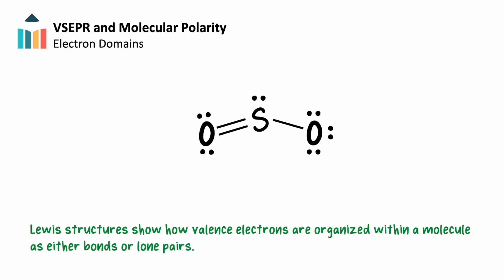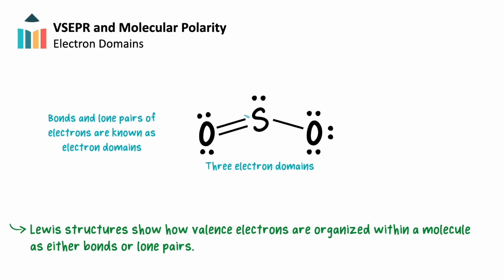Lewis structures show how valence electrons are organized around the atoms within a molecule. Around the central atom in a structure, we call the electrons that are grouped in bonds or lone pairs electron domains. For example, the central sulfur atom in sulfur dioxide has three electron domains, including the double bond, lone pair of electrons, and single bond.